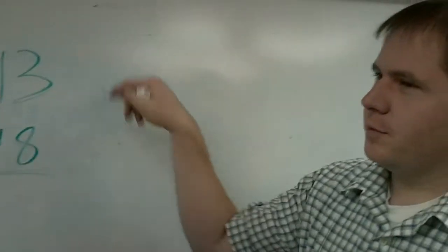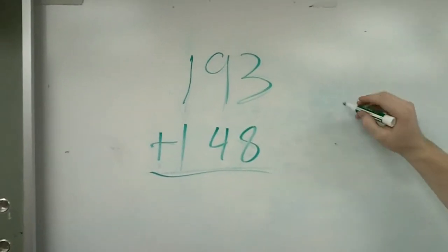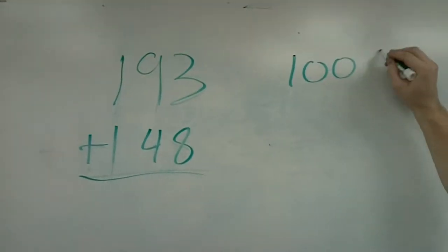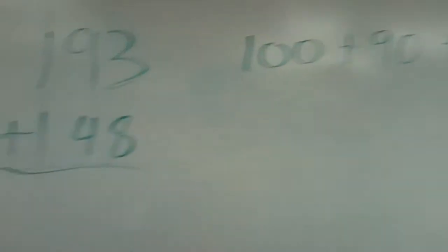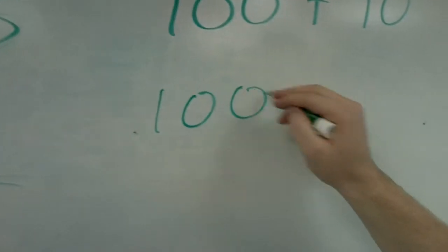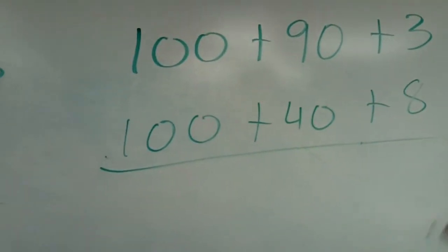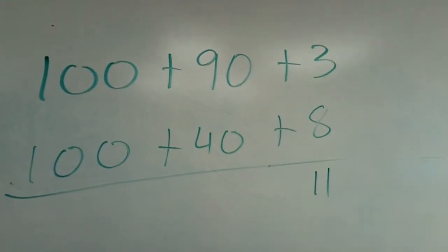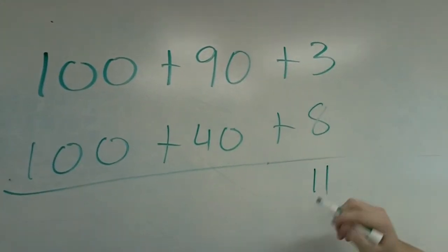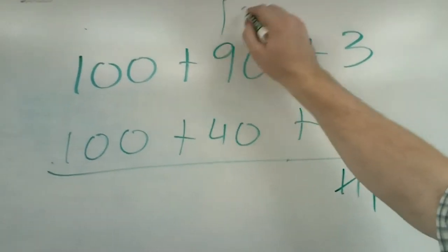So now we're going to do this problem together so that you can check your work. So we're going to write this out in expanded form. This is 100 plus 90 plus 3, and the other number is 100 plus 40 plus 8. So we're going to start in the ones column. 3 plus 8 is 11. That's too large to be in the ones, so we're going to take a 10 out of that, make it 1, and regroup that 10.